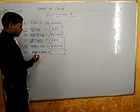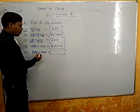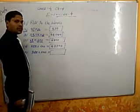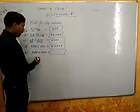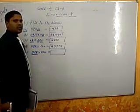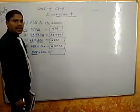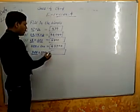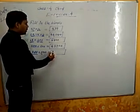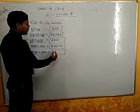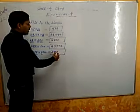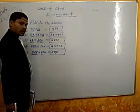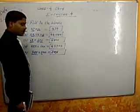Now we see the next question: 928 into 1000. We will multiply 928 by 1 — the same number will come, students. 928 stays the same.